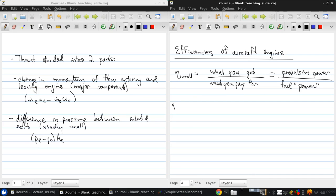So let's define what these mean. The propulsive power is the thrust times the flight velocity, because force times velocity has units of power. So this is just f u0.